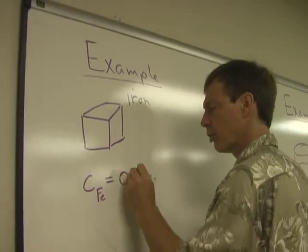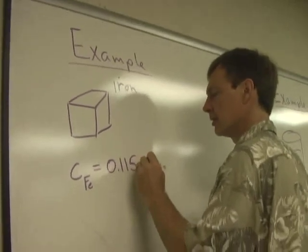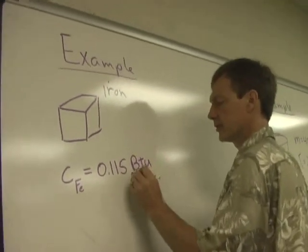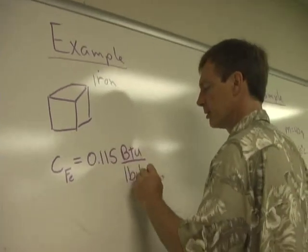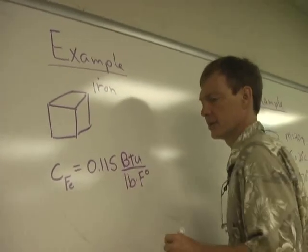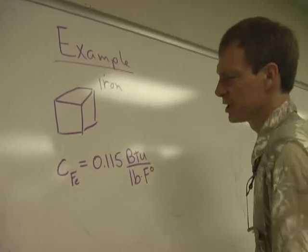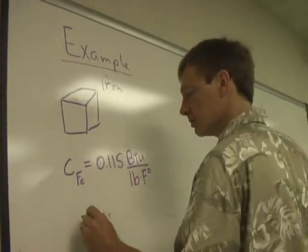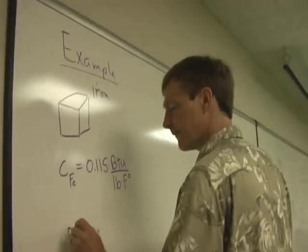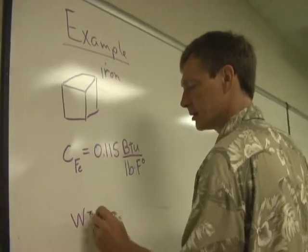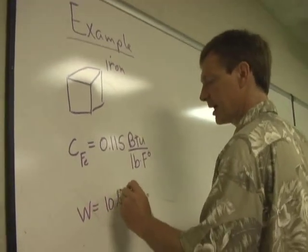I think it's 0.115 British thermal units per pound per Fahrenheit degree. And let's say I've got 10 pounds, my weight is 10 pounds. I've got 10 pounds of iron.